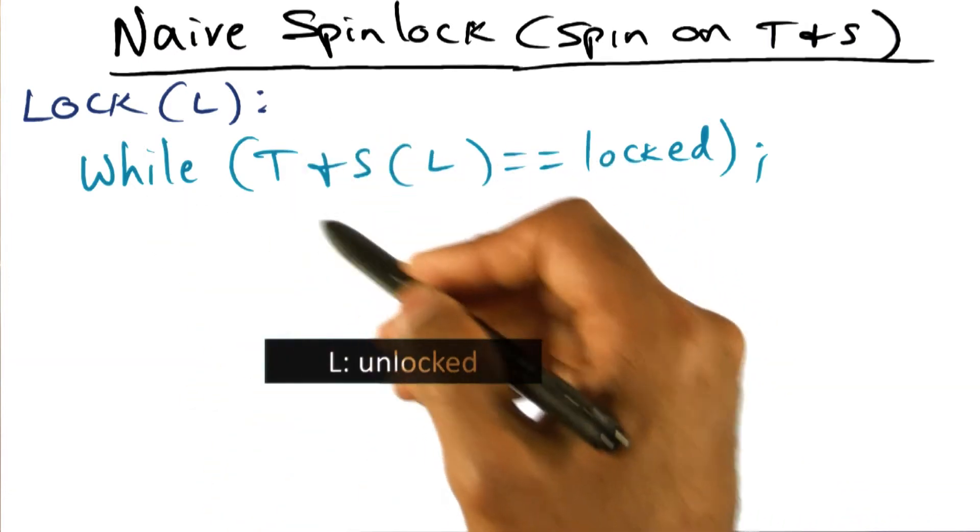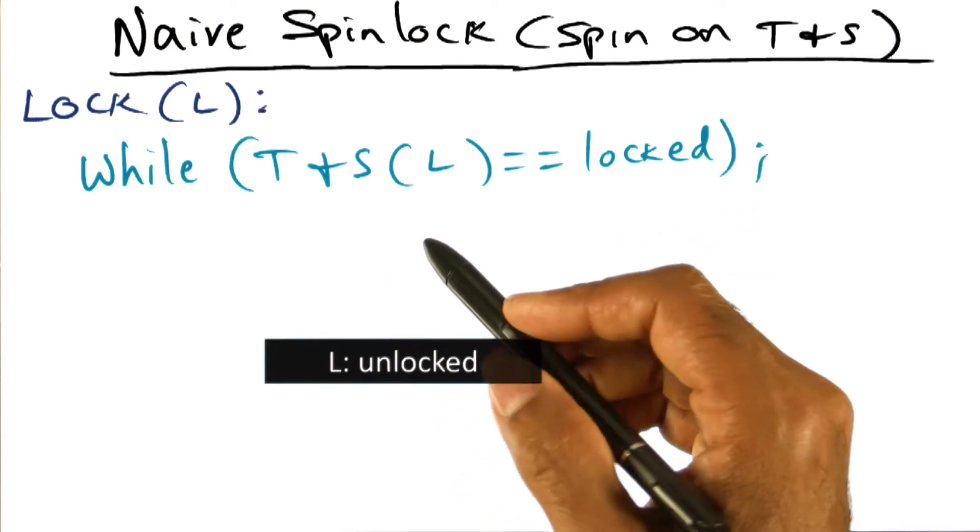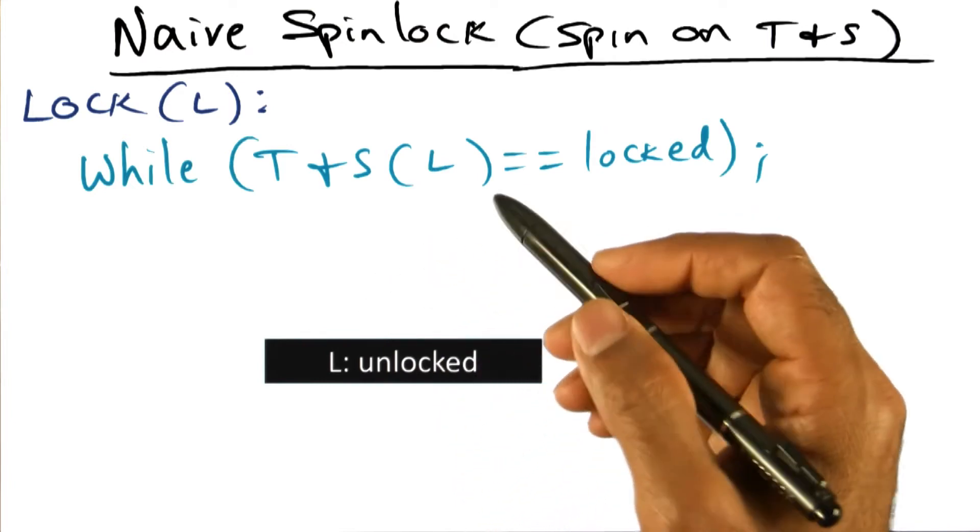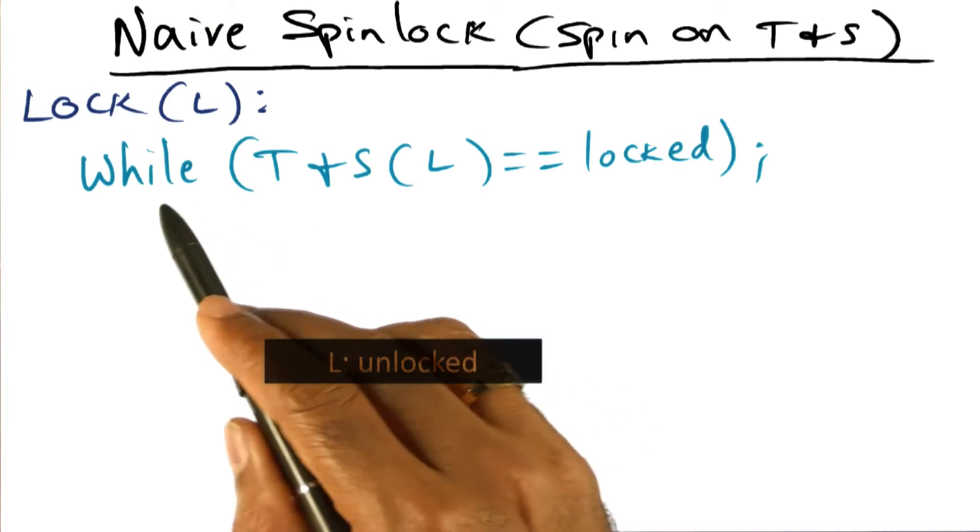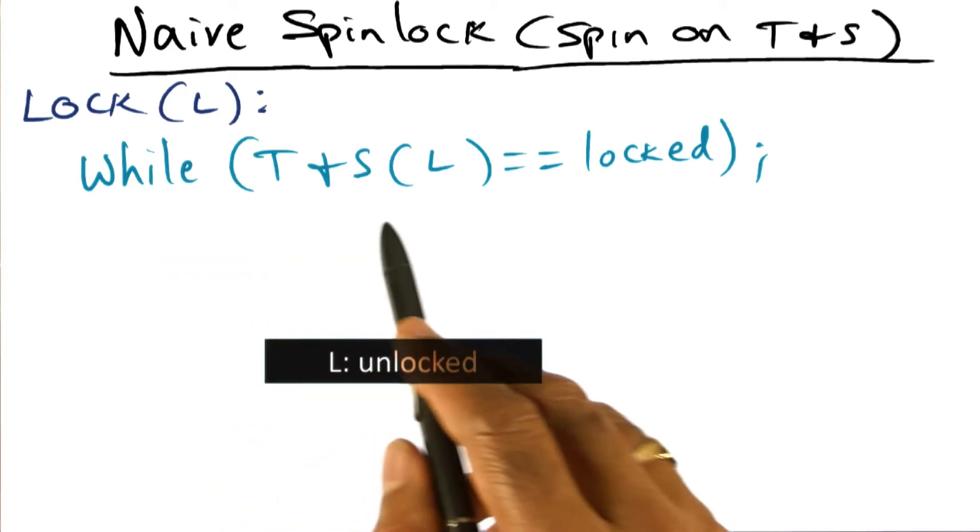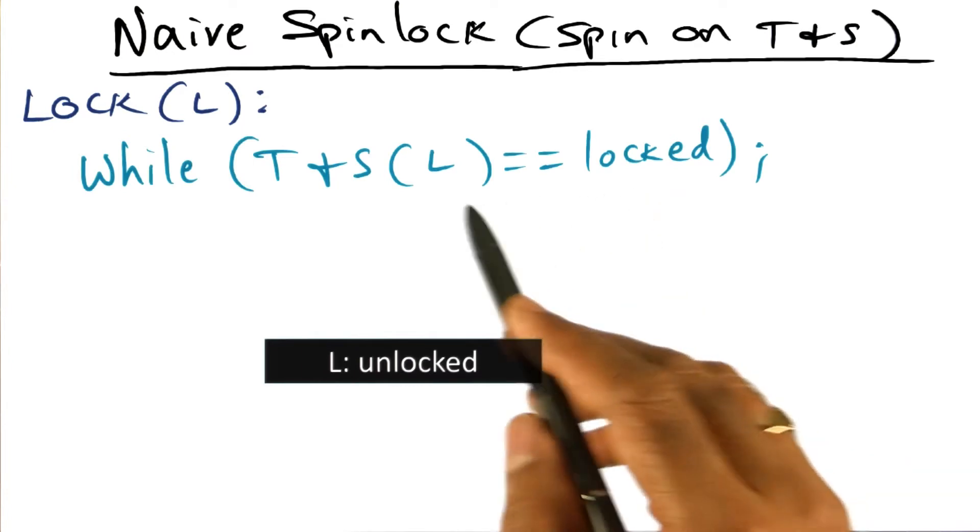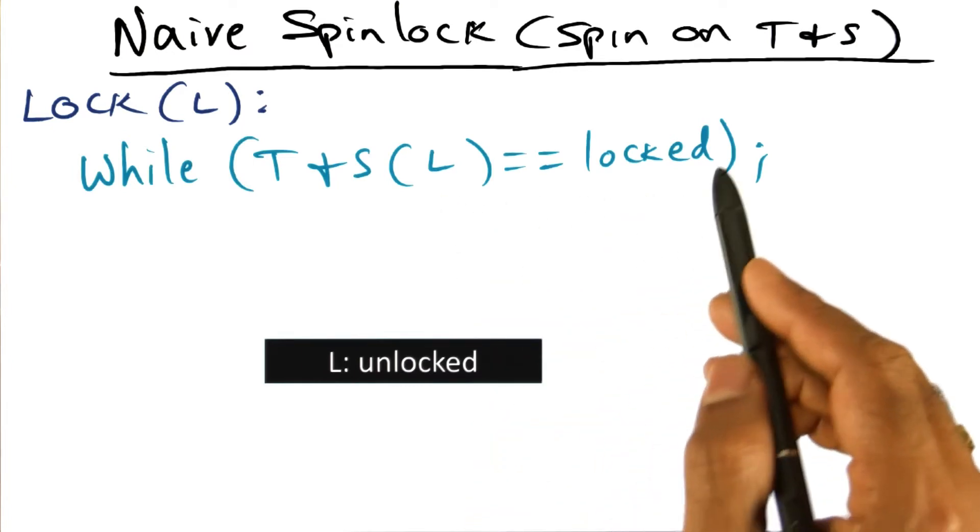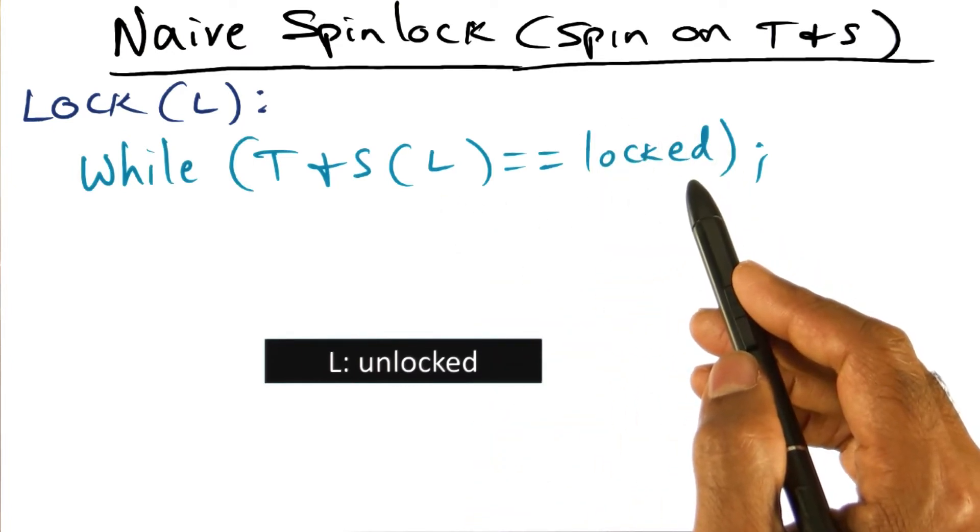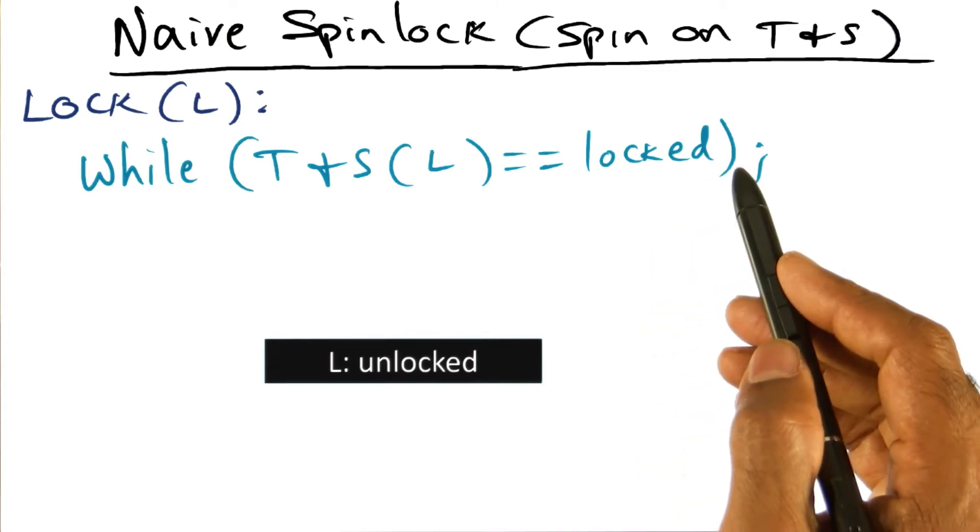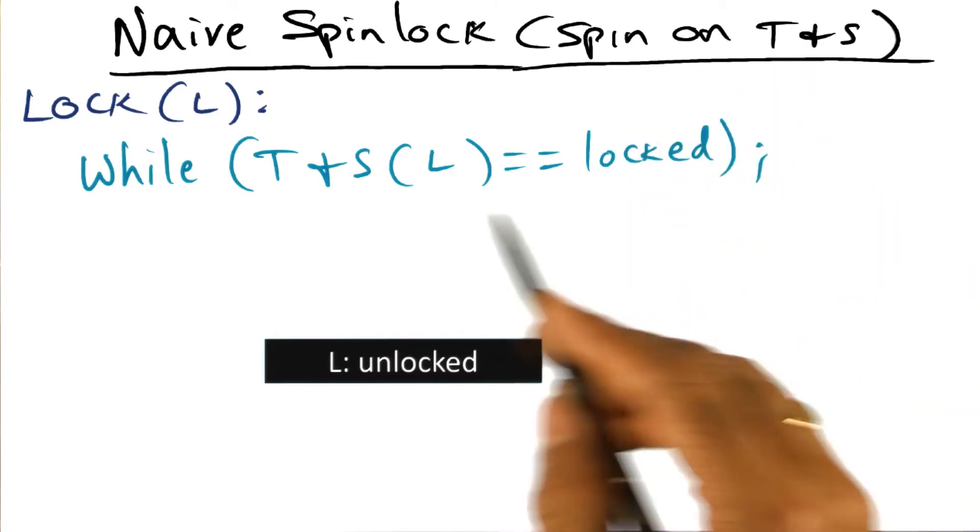That's going to be done atomically. We know that from the architecture that it is going to provide that as a primitive. So now, if we find that this test and set instruction execution returns the value locked, it means that somebody else has got the lock. Therefore, I cannot use it, and I'm going to basically spin here. That's why it's called spin on test and set.